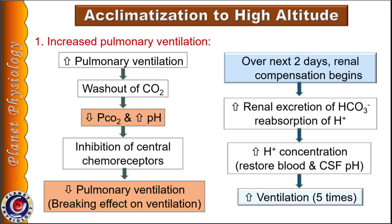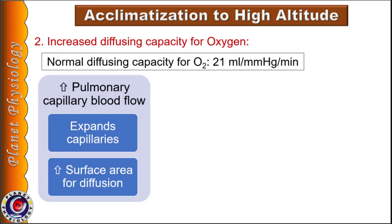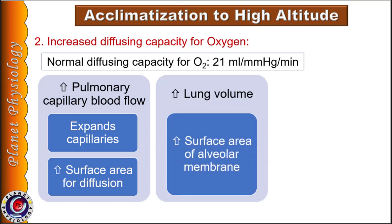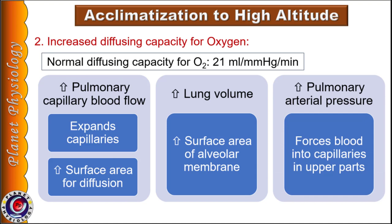Respiratory centers become more responsive to peripheral chemoreceptor inputs, and ventilation increases by about 5 times. Rise in ventilation occurs in two phases — initially a very small rise and later a rise to higher levels. At high altitude, not only does ventilation increase but the oxygen diffusing capacity of the lungs also increases, due to increased pulmonary capillary blood flow which expands capillaries and increases the surface area available for diffusion. Increased ventilation also increases lung volume, again leading to increase in surface area for diffusion. Higher pulmonary blood pressure forces blood into capillaries especially in the upper part of the lungs, converting them to zone 3 blood flow, and increased diffusion capacity improves oxygen uptake by the blood.